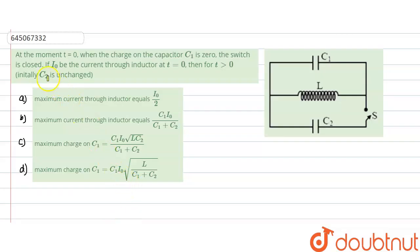Hello everyone, let us start with our question. In this question, what is given? At the moment t equals zero, when the charge on the capacitor C1 is zero, the switch is closed. Now if I₀ is the current through the inductor at t equals zero, then for t greater than zero, we need to identify the maximum current through the inductor and also the maximum charge on C1.